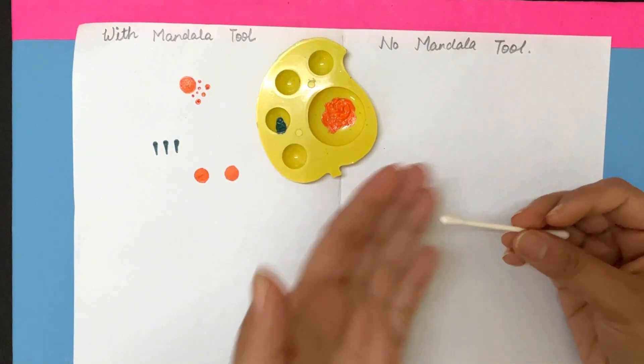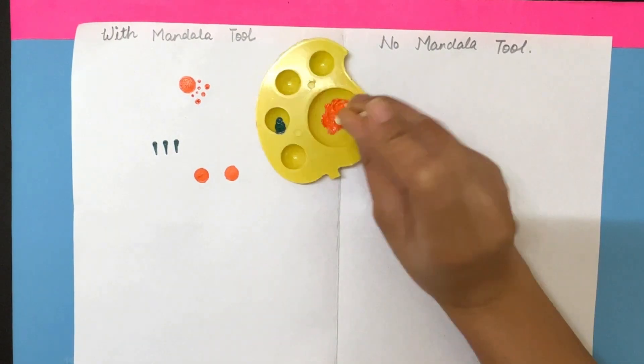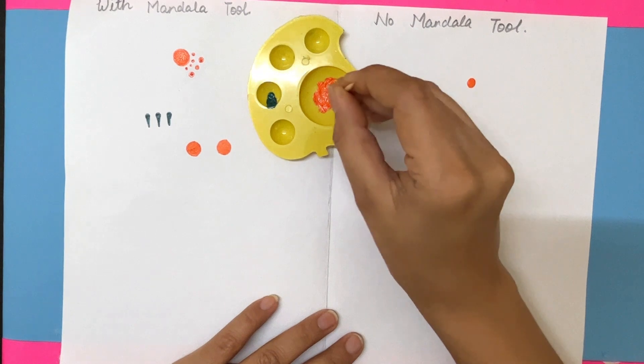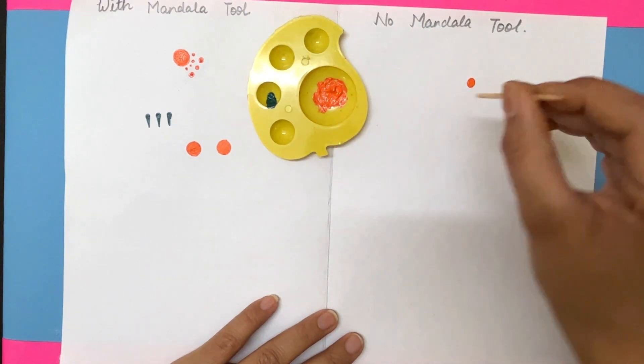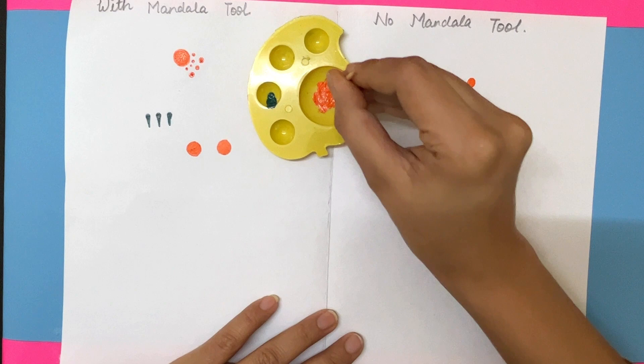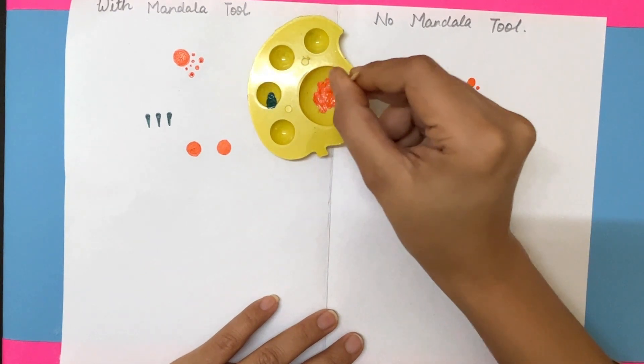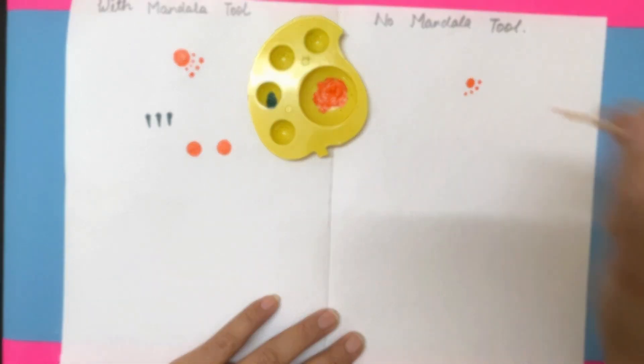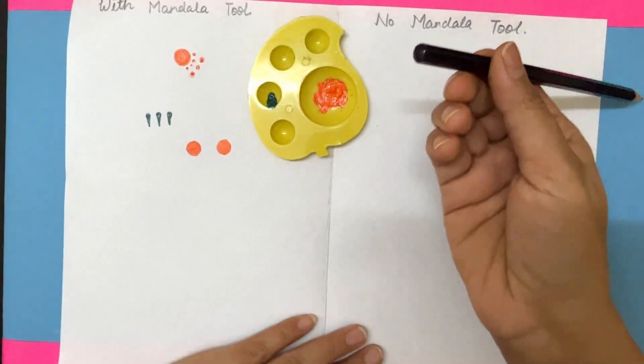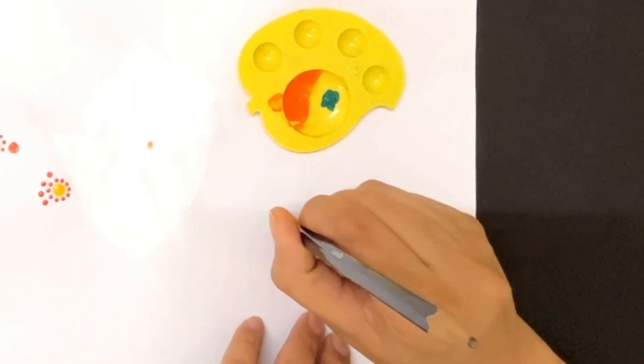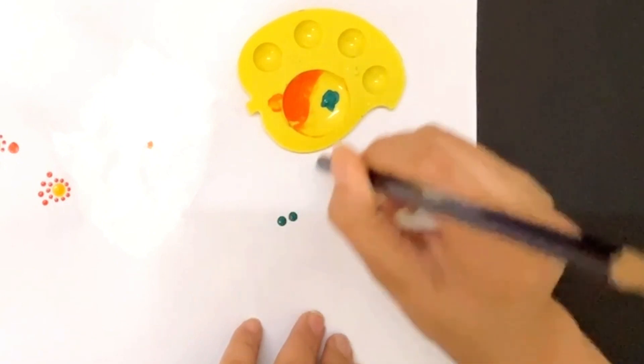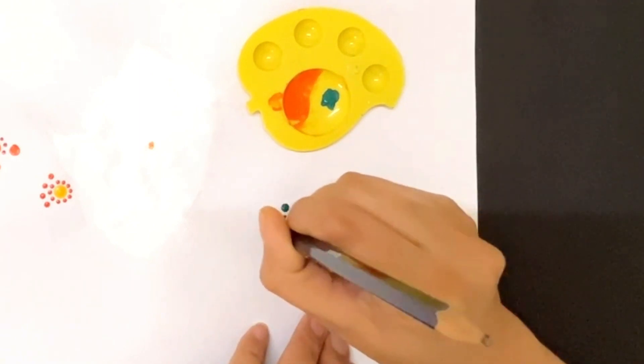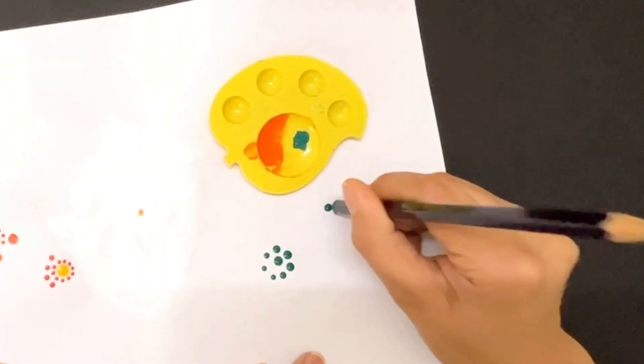Now, let's see how you can create the same design without traditional mandala tools. Simply take an earbud, dip it in color, and gently press it to create perfect dots. Use a toothpick to create small size dots. You can also create the dots using a pencil. Just dip its back side in paint and effortlessly create dots. You can make beautiful designs using this back side of the pencil.